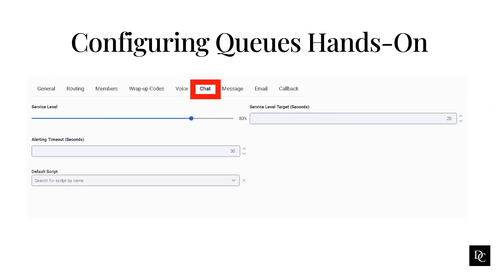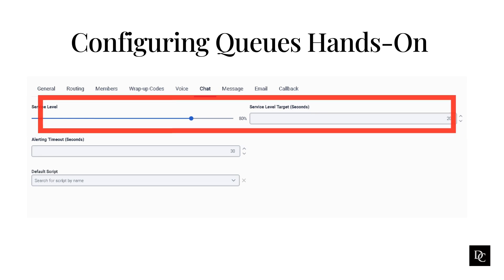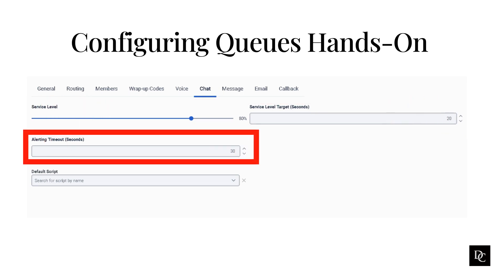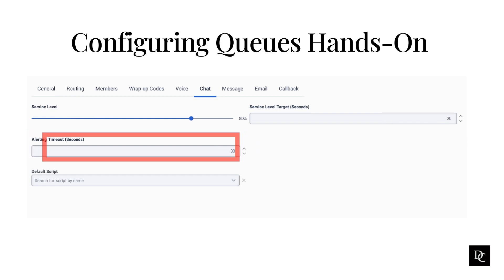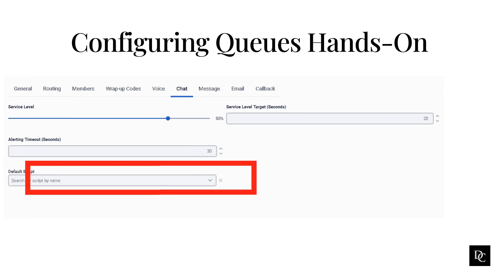If this is a chat queue, there are a few options you can set. Under service level, use the slider to select the service level percentages for this channel. Under service level target seconds, enter the service level target in seconds for this channel. Under alerting timeout in seconds, enter the number of seconds for an alert to display before timing out. Under default script, optionally select a published script to load.